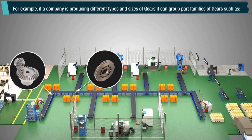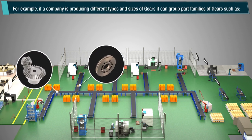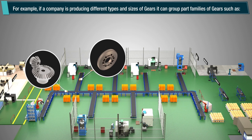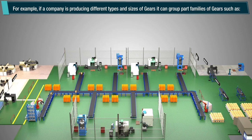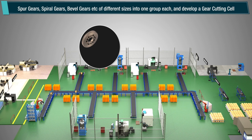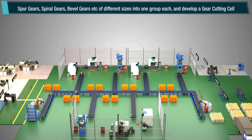For example, if a company is producing different types and sizes of gears, it can group part families of gears such as spur gears, spiral gears, bevel gears, etc., of different sizes into one group each, and develop a gear cutting cell.